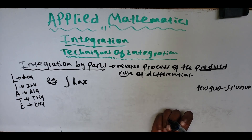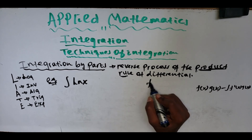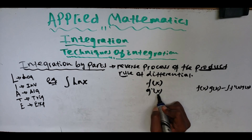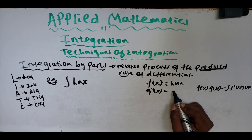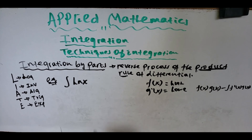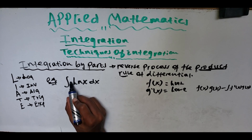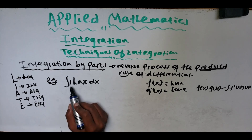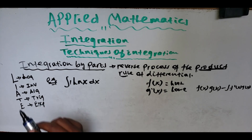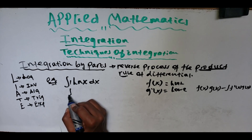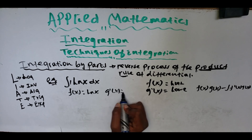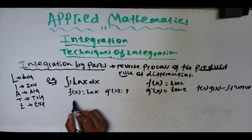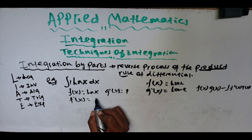Every time we solve integration by parts, we have to remember the order of precedence: f(x) always has the highest precedence and g'(x) has the lowest. Here we have ln(x) and 1. Since ln(x) is a logarithm and 1 is algebraic, ln(x) has the highest precedence, so f(x) = ln(x) and g'(x) = 1.